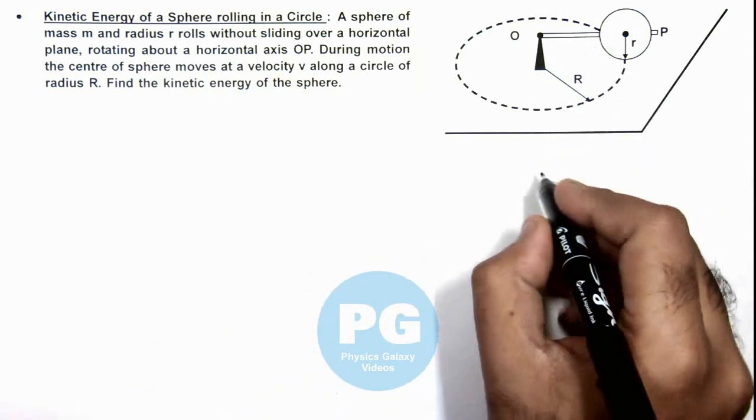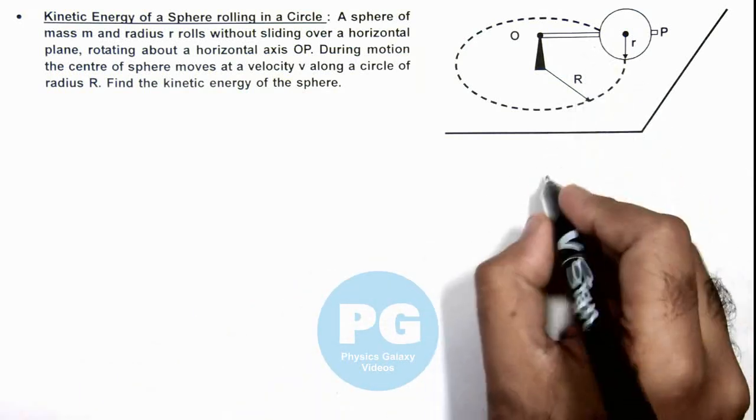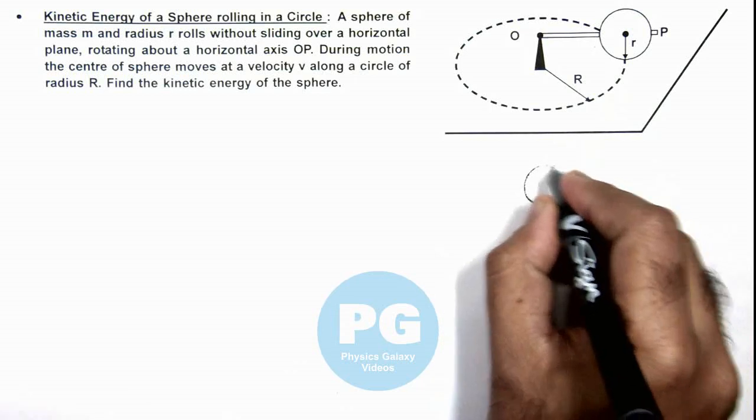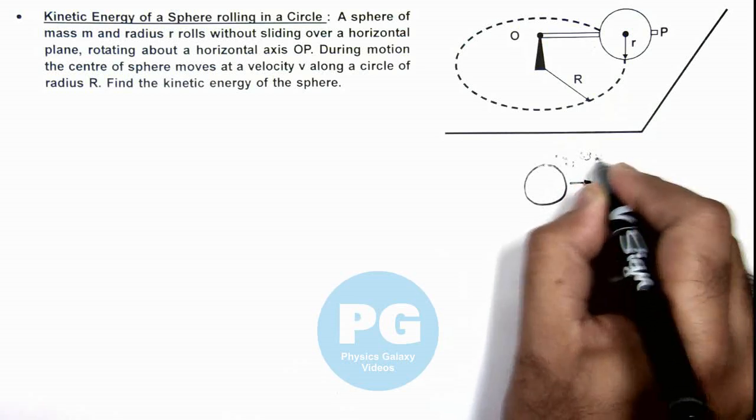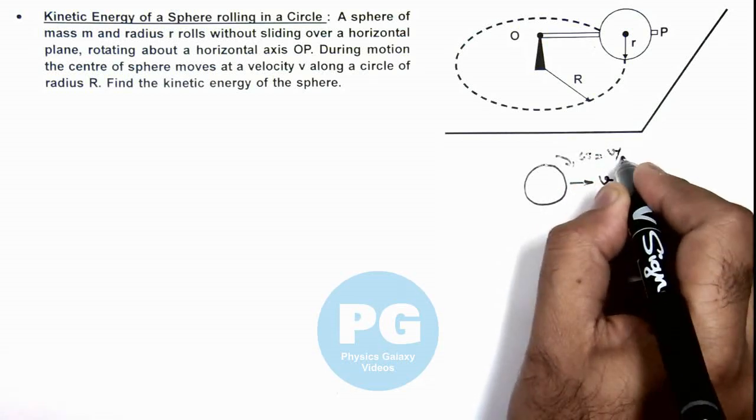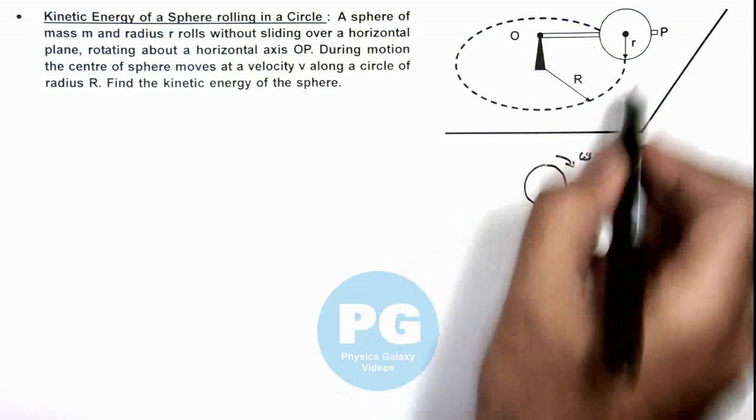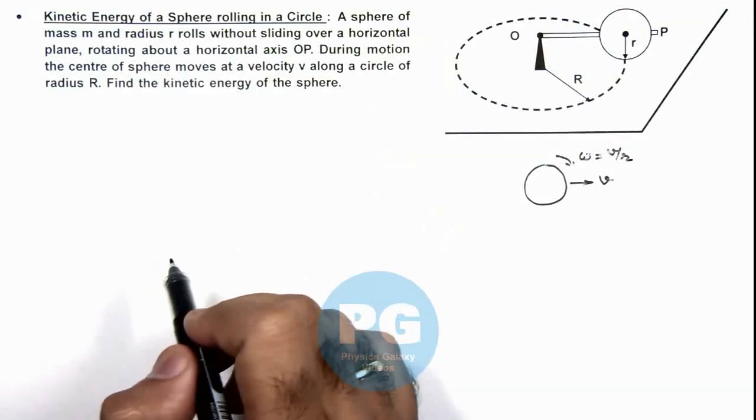If we draw the cross-sectional view of this sphere, we are given that this sphere is moving with velocity v. So in pure rolling, its angular speed we can write as v by r, and this is revolving in a circle of radius R.